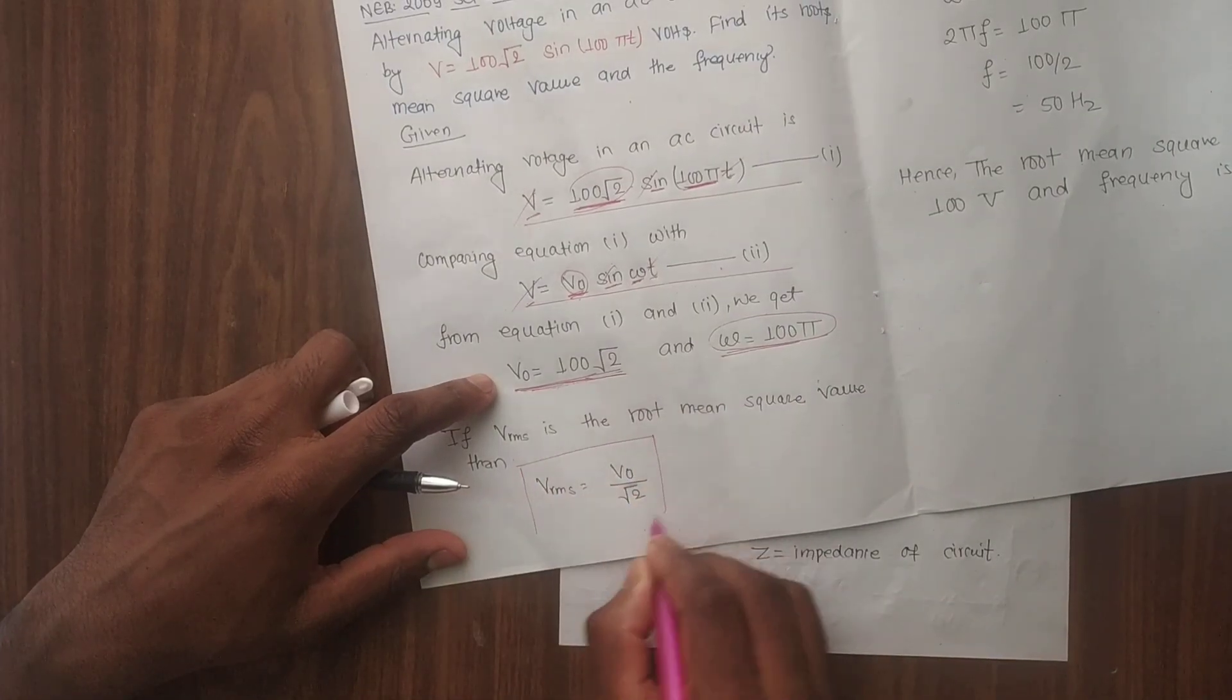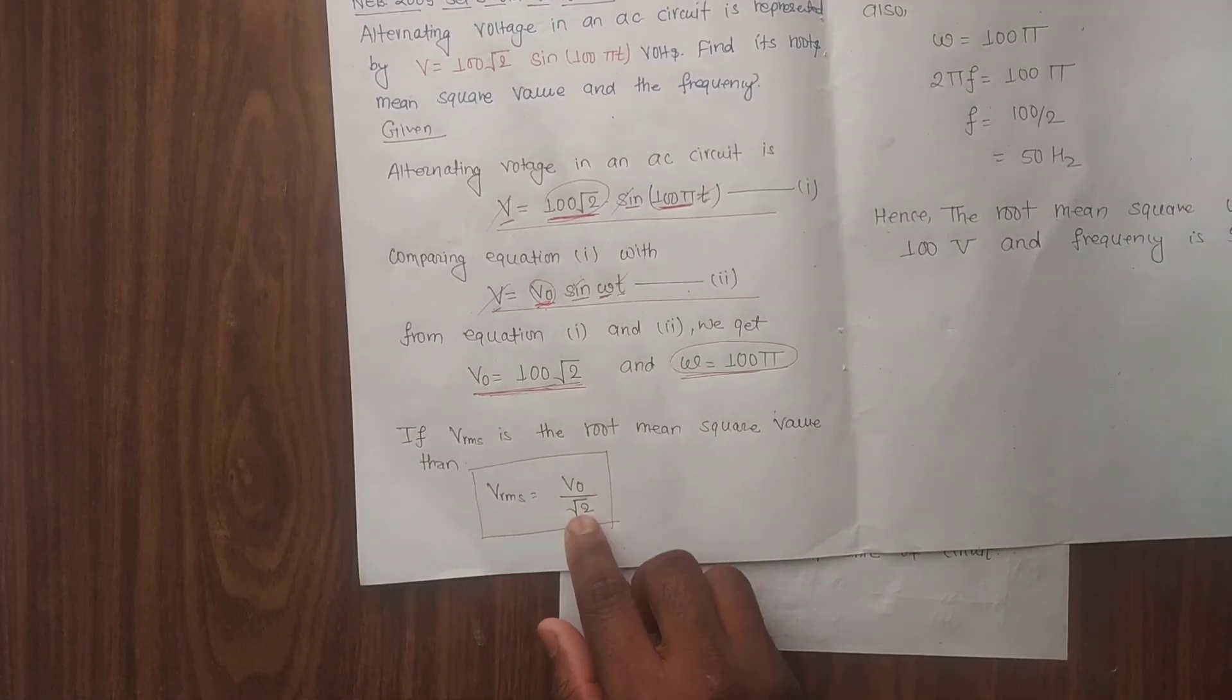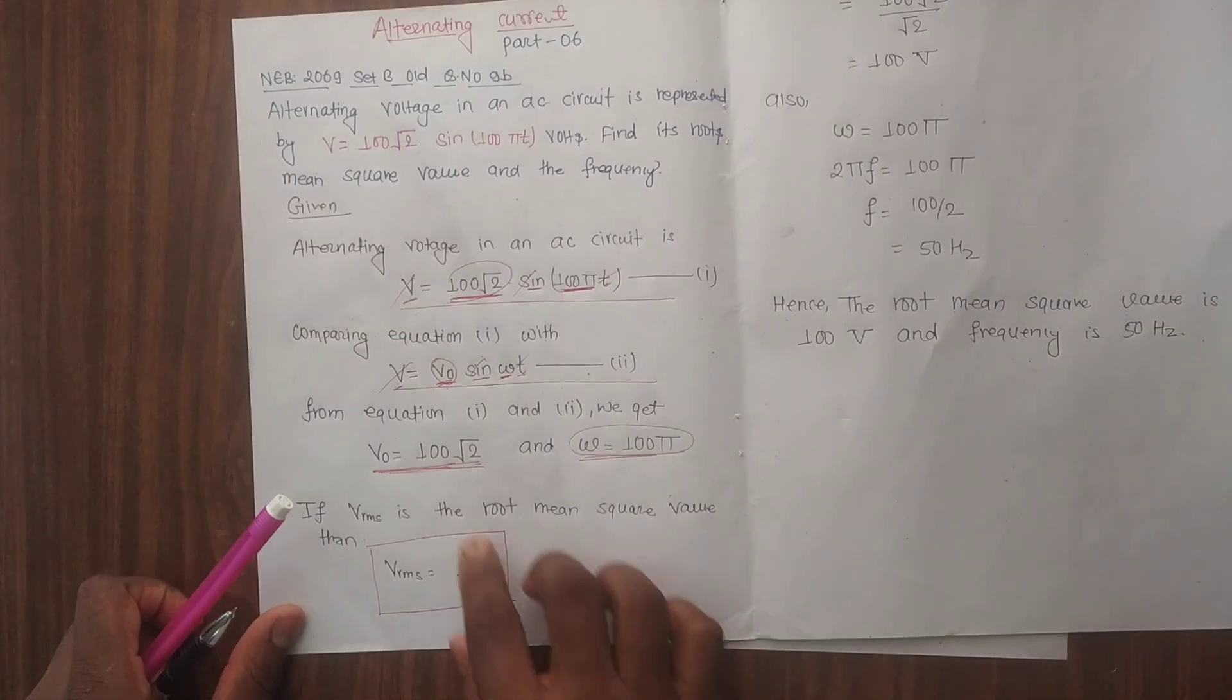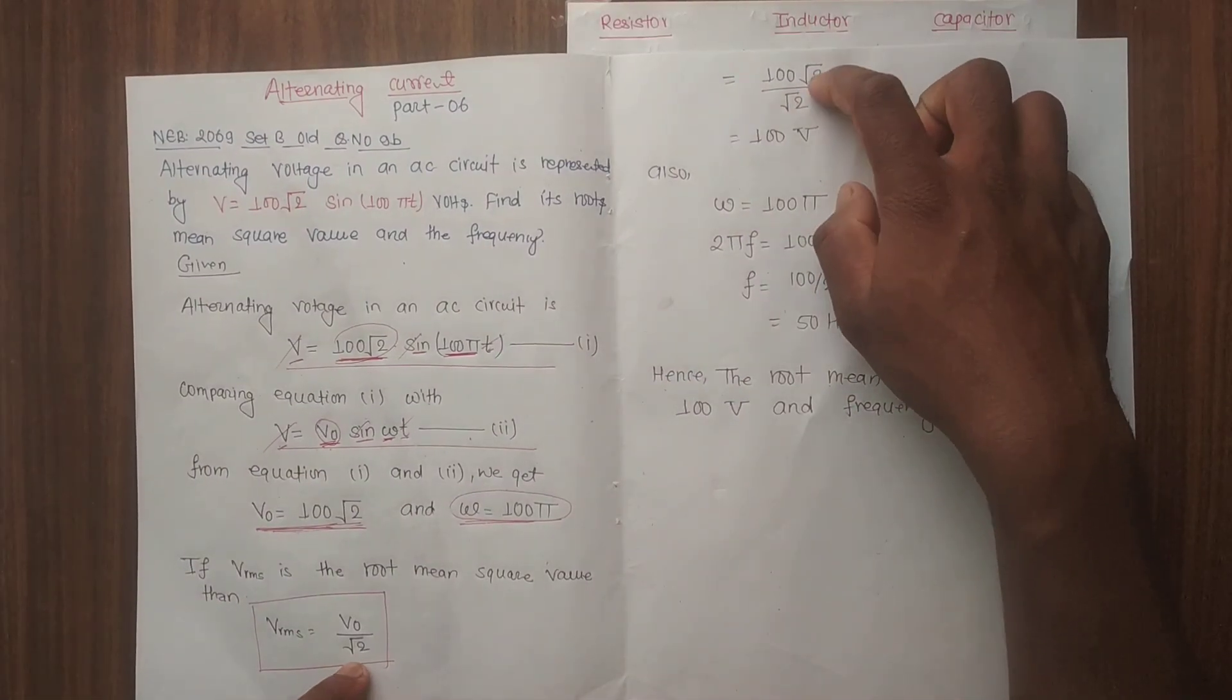Therefore, RMS equals V0 by √2. V0 equals 100, so 100 by √2 times √2 by √2 equals 100 volt.